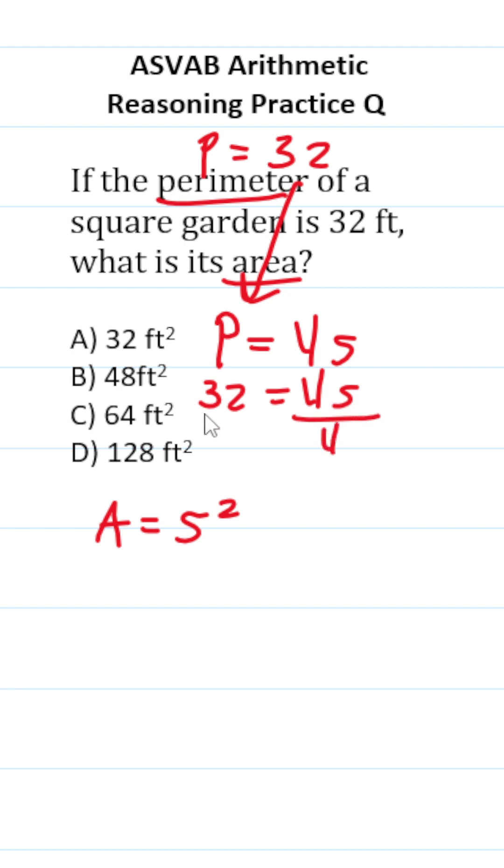Let's solve for S by dividing both sides by 4. In doing so, this crosses out, leaving us with S on this side. 32 divided by 4 is 8. So now we know that S equals 8.